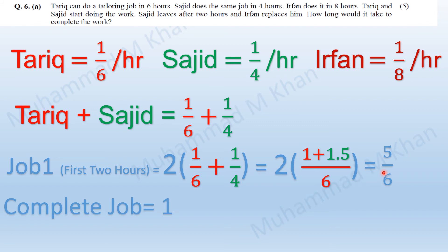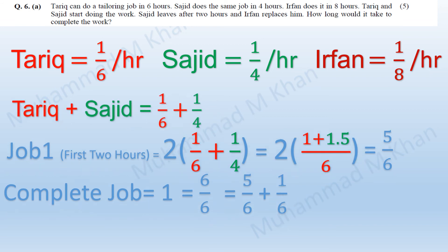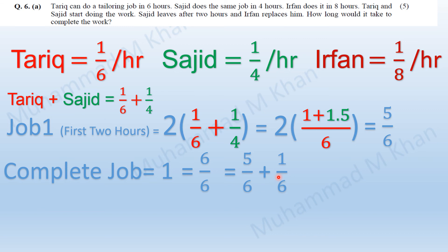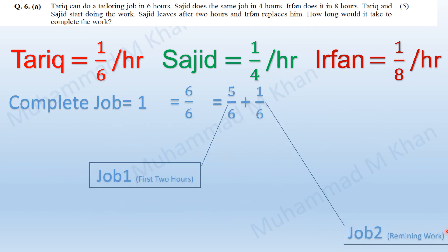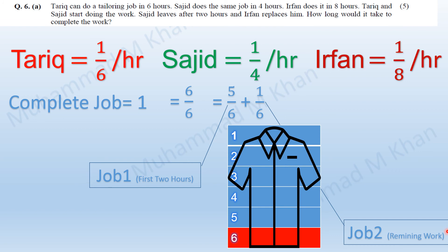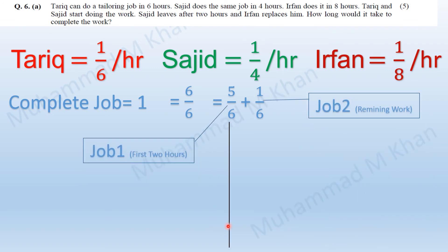We know that the complete job is 100%, or 1, which can also be written as 6/6. Since 5/6 of the job has been done in 2 hours, the remaining amount of work required is 1/6. So 5 parts of the job have been done by Tariq and Sajid together in 2 hours, and the remaining 1/6 is what Sajid and Irfan need to complete.